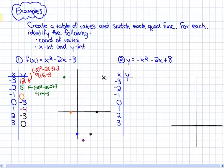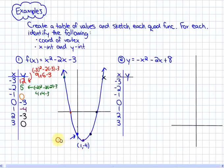For this particular function, we have a vertex of (1, negative 4), and we have a y-intercept of (0, negative 3), an x-intercept of (negative 1, 0), and another x-intercept of (3, 0).